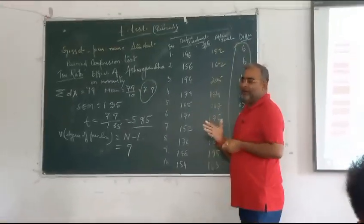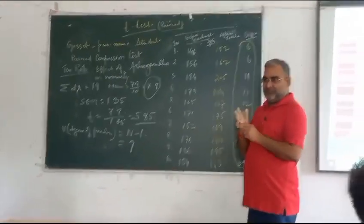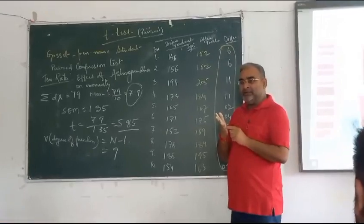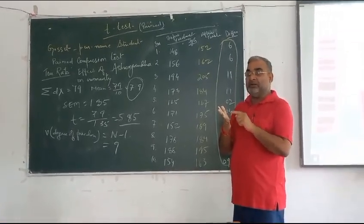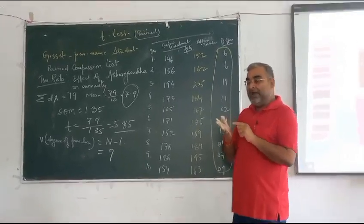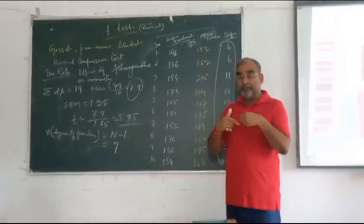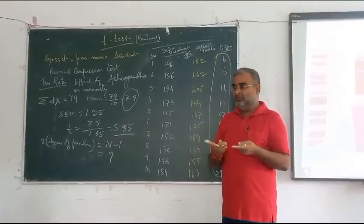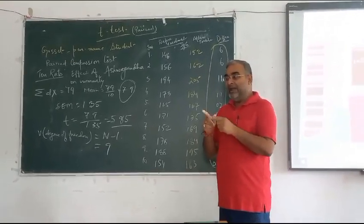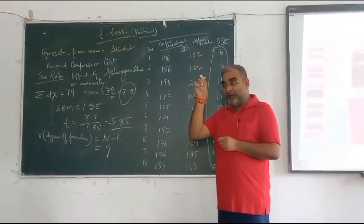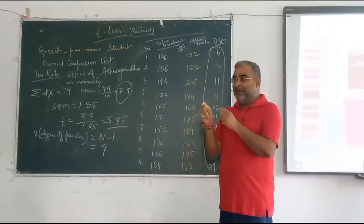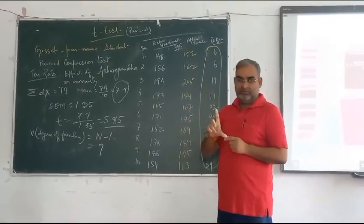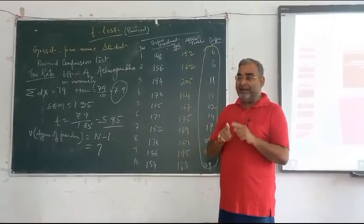And the steps are: at first you calculate the deviation of mean. Then you calculate the deviation value, difference between the deviation value and the deviation mean. Then you calculate the square of the deviation from mean, then you sum up the total and then you get the standard error.